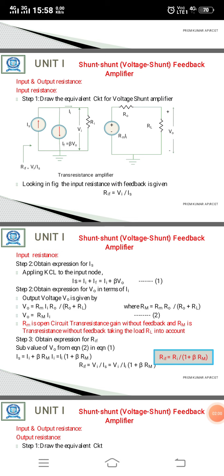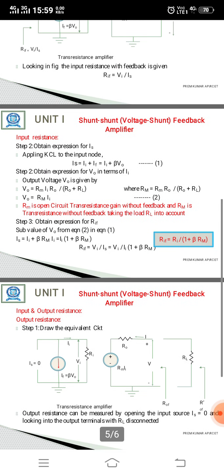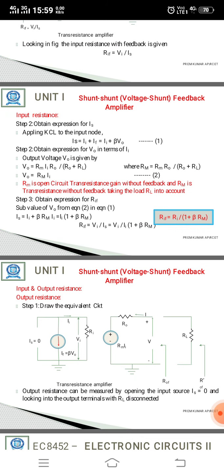Obtain the expression for R_IF. The input resistance with feedback R_IF is equal to R_I divided by 1 plus beta times RM. The input resistance with feedback R_IF is given as R_IF equal to V_A divided by Is, which simplifies to R_I divided by 1 plus beta times RM.